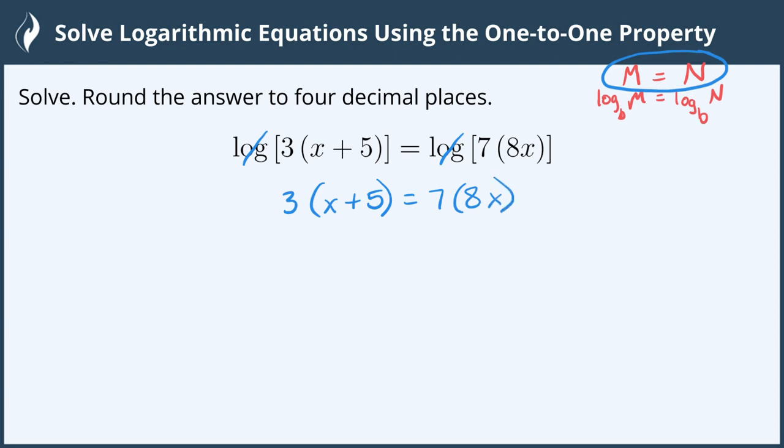This releases the variable from inside the logarithms. Now we can go ahead and multiply. On the left-hand side we'll do the distributive property, giving us 3x plus 15, and on the right 7 times 8 is 56, and we still have the x.